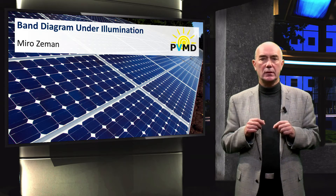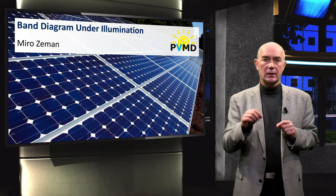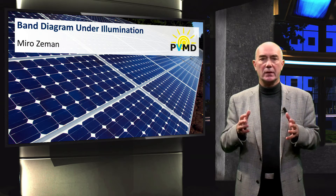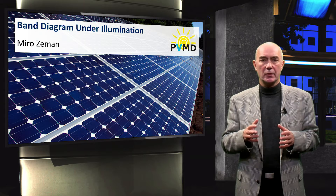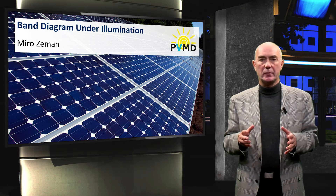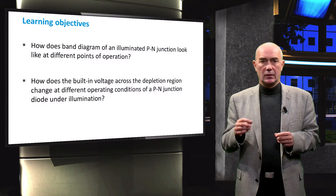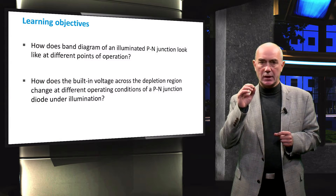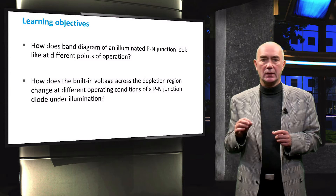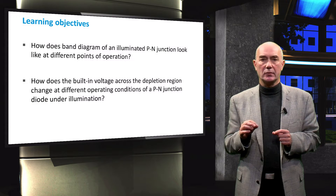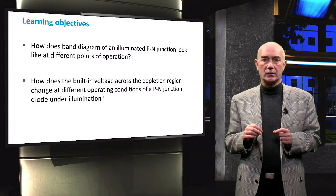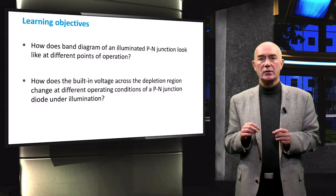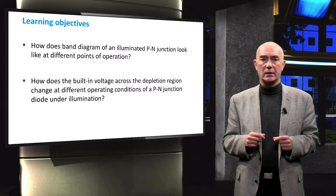In this video we will continue our discussion on the illuminated PN junction diode and see how the band diagram of an illuminated PN junction diode changes at different operating points. The learning objectives of this lecture are to understand the changes in the band diagram of an illuminated PN junction diode at different operational conditions, and how the built-in voltage changes across the depletion region at different operating conditions.